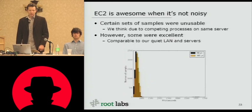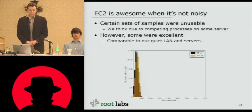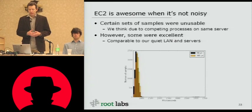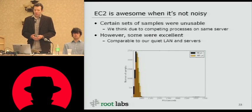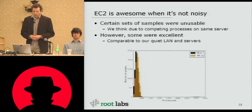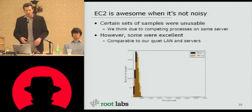EC2 is really awesome when it's not noisy, but it can be really bad when it is. Certain sets of our samples were completely unusable, and we think this could be due to competing VMs. While the Rice University talk focused on competing processes on the same physical box — for instance, scheduling Apache processes — we think that the scheduling algorithm or something related to the Xen hypervisor used by EC2 may be more dangerous to taking good samples. However, when we did get good results, we would often get runs entirely composed of good results, and in those cases it was comparable to — in fact often better than — our quiet LAN. So they had better hardware there.